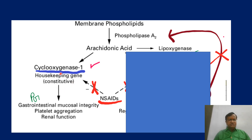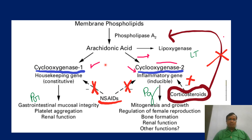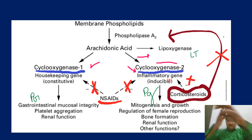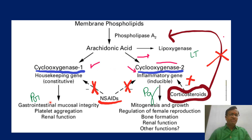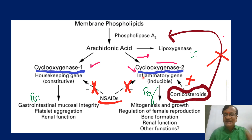COX-1 is constitutive — it is present in the body normally for gastrointestinal mucosal integrity, platelet aggregation, and renal function. NSAIDs block both COX-1 and COX-2. COX-2 is induced when there is an injury. If a drug could selectively block COX-2 but not COX-1, we get advantages — these are called COX-2 selective or COX-2 preferential inhibitors.